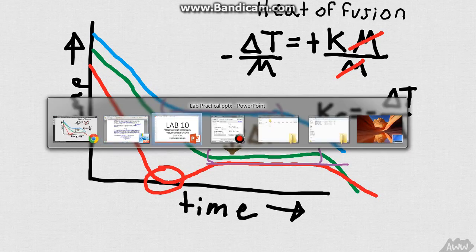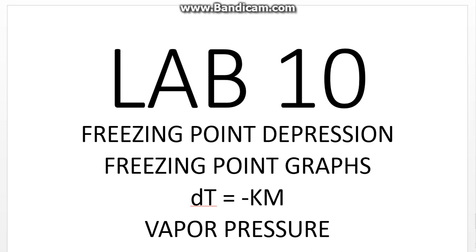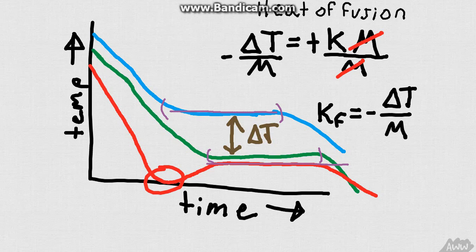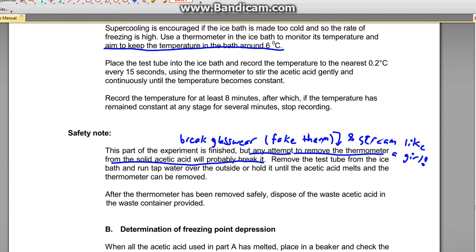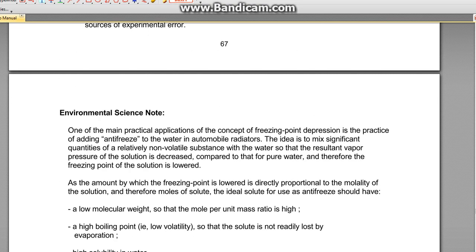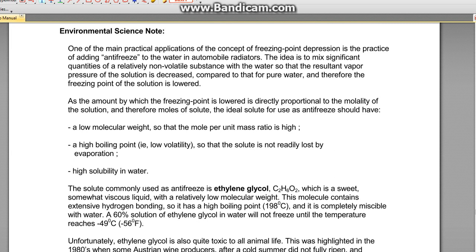Okay so that should mostly cover lab 10. You also need to know what vapor pressure is and when it will increase or decrease. So obviously we are adding something to our mix that's going to be affecting our vapor pressure. So if you go into the bottom of this lab there's a little section that says environmental science note. And it kind of talks a little bit about a good example which is antifreeze.